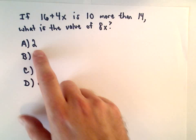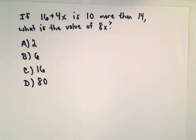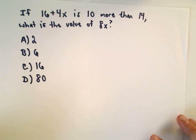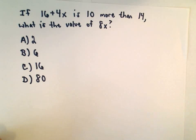We've got answer choices of 2, 6, 16, or 80. So what I would do on this one is turn this into an equation and then solve for x, and then you could multiply by 8 and get the solution. So that's going to be the approach I'm going to use here.